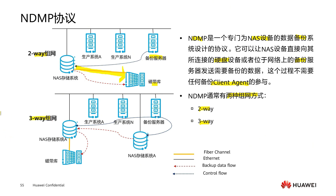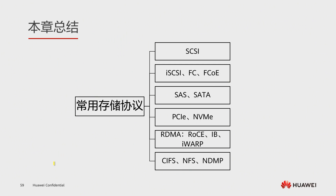In this video, we mainly introduced five protocols and their definitions, functions, and working principles. In this chapter, we covered commonly used storage protocols, including SCSI, iSCSI, FC, FCoE, SAS, SATA, PCIe, NVMe, RDMA, CIFS, NFS, and NDMP. When introducing RDMA, we also covered RoCE, InfiniBand, iWARP, and other related content. That concludes the main content of this chapter. Thank you for learning — see you in the next lesson.